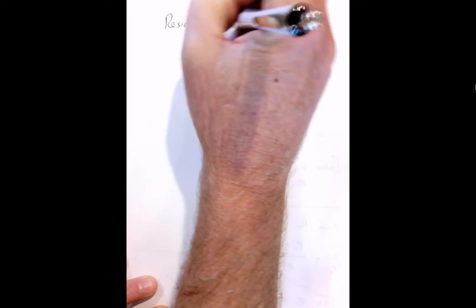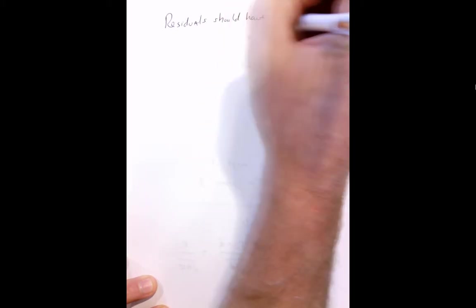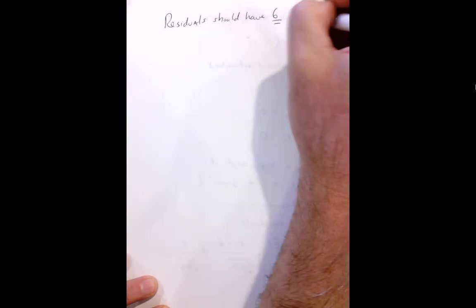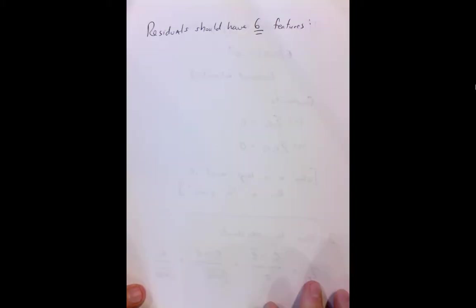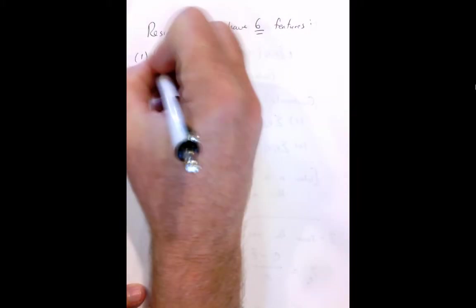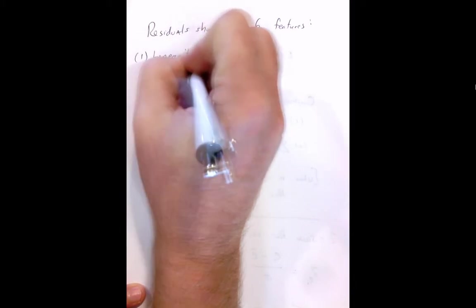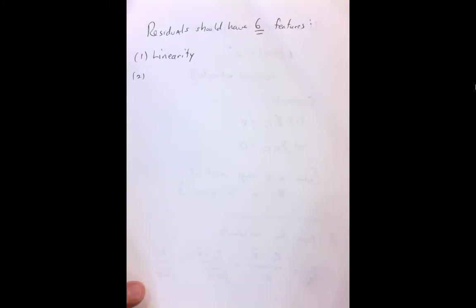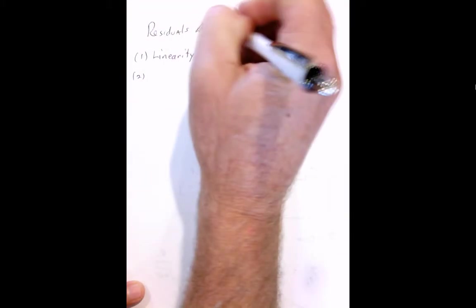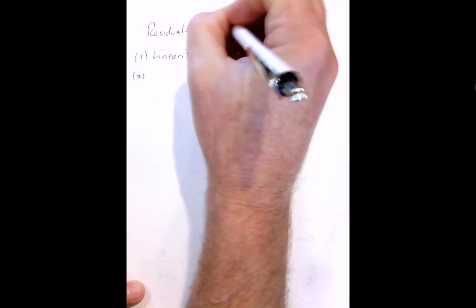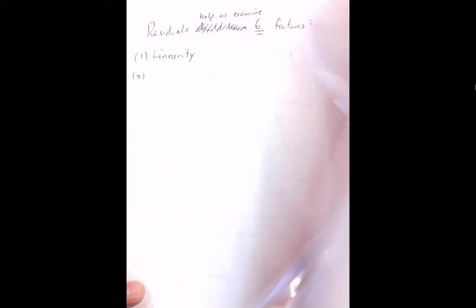Some books actually call this approximated standardized values or approximated z-scores. I've even seen it called semi z-scores, semi student dyes I guess that would be a way of actually looking at that. All right gang, let's get into the nuts and bolts of what we should have. Residuals help us examine six features.